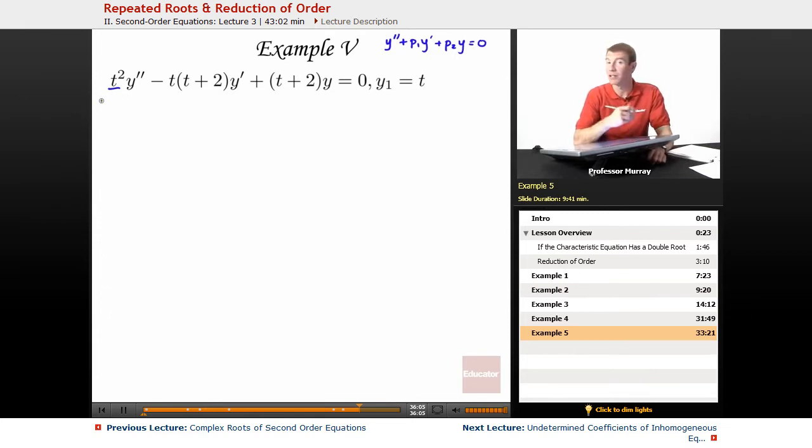I'm going to divide that coefficient away so we'll get the right form to invoke our formula for reduction of order. So I'll get y double prime minus t times t plus 2 over t squared y prime plus t plus 2 over t squared y equals 0.